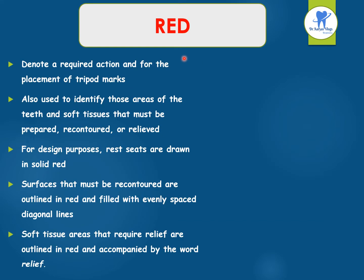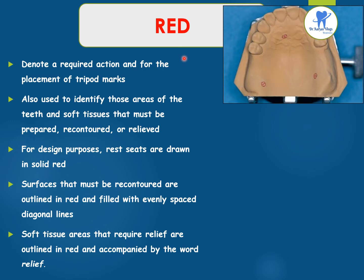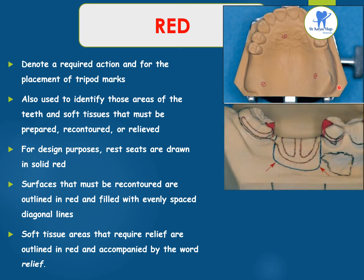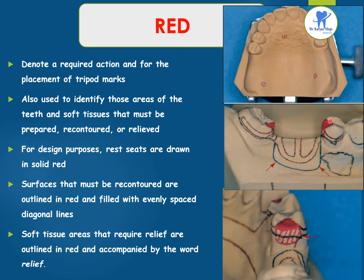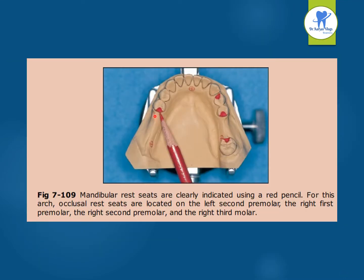What does the red colour denote? It denotes a required action and the placement of a tripod. Tripod marks can be marked using a red pencil. It is also used to identify those areas of the teeth and soft tissues that must be prepared, re-contoured or relieved. For design purposes, the rests are drawn in solid red. The surfaces that can be re-contoured are outlined in red and filled with evenly spaced diagonal lines. The soft tissue areas that require relief are outlined in red and accompanied by the word 'relief'.